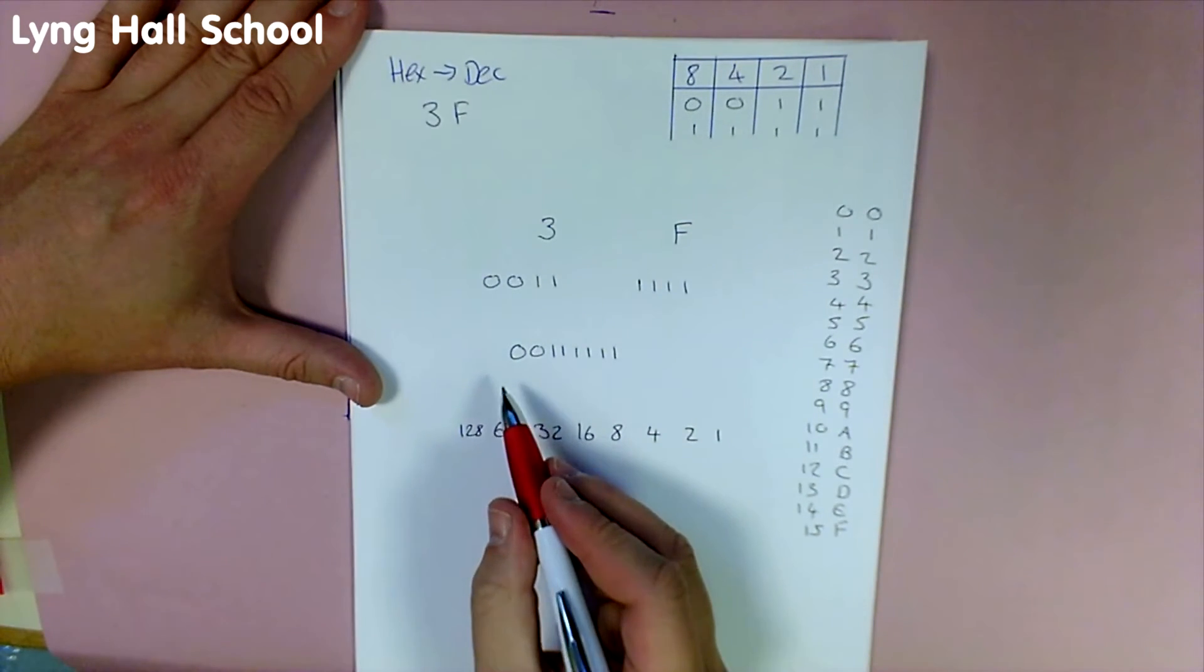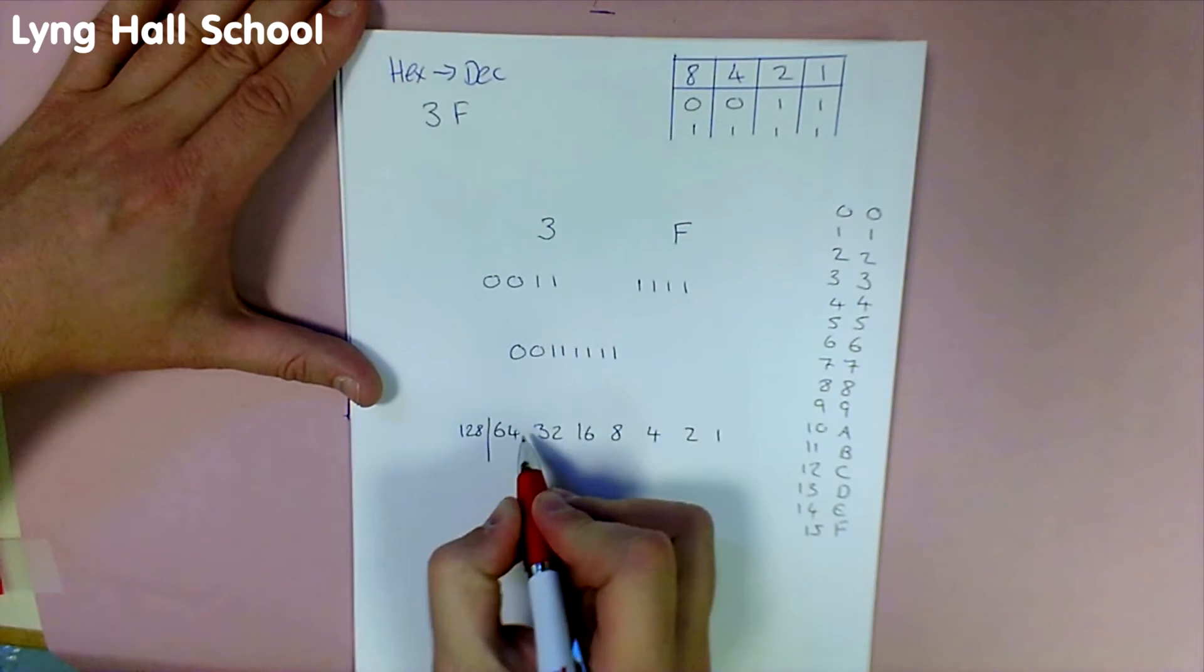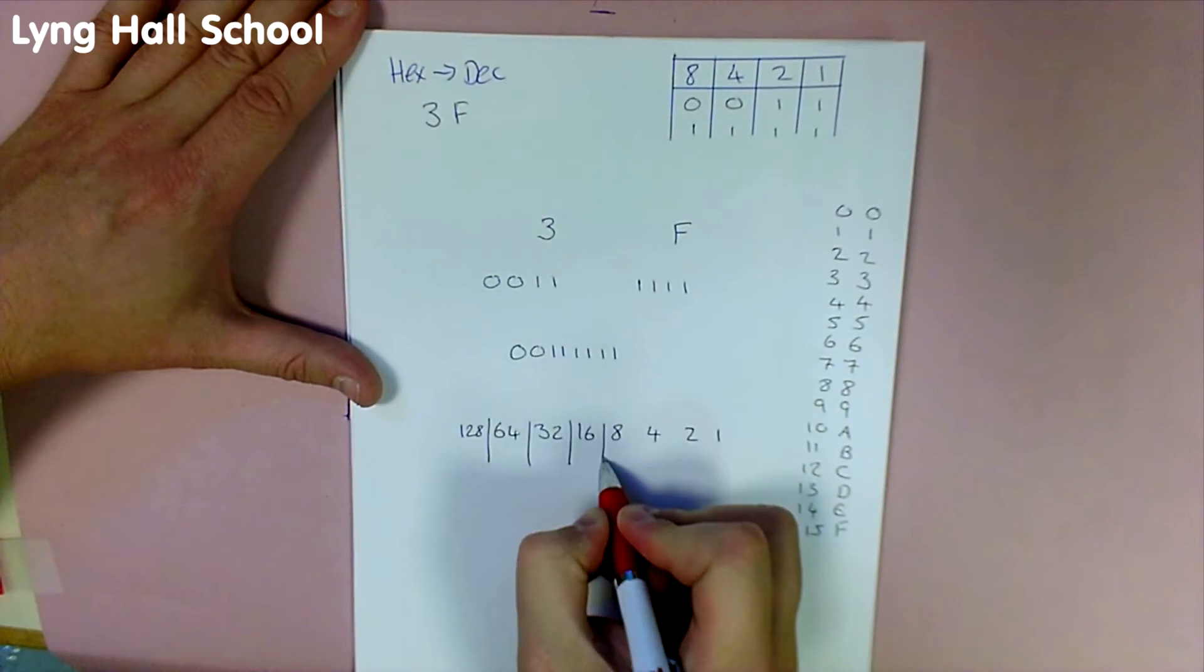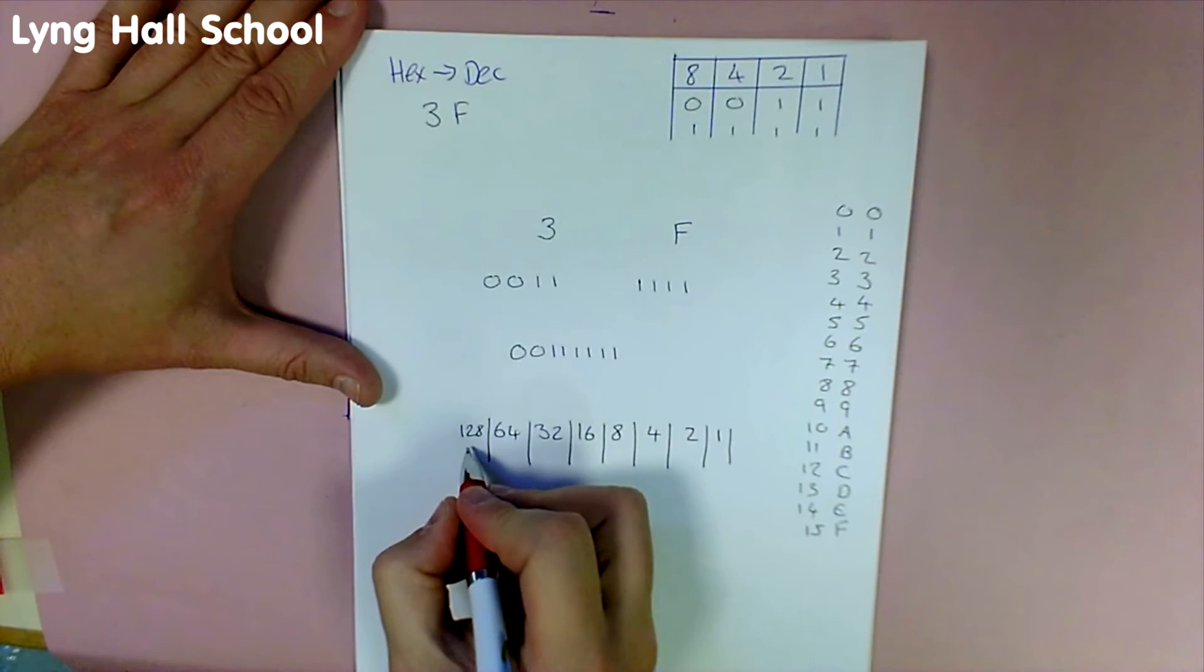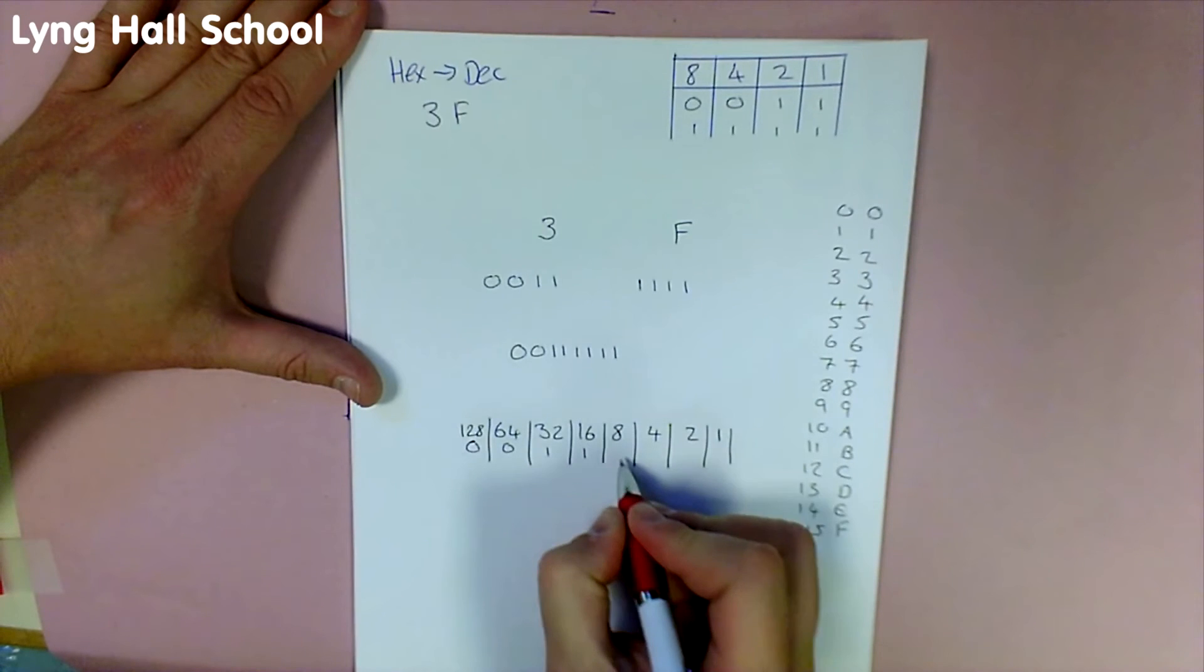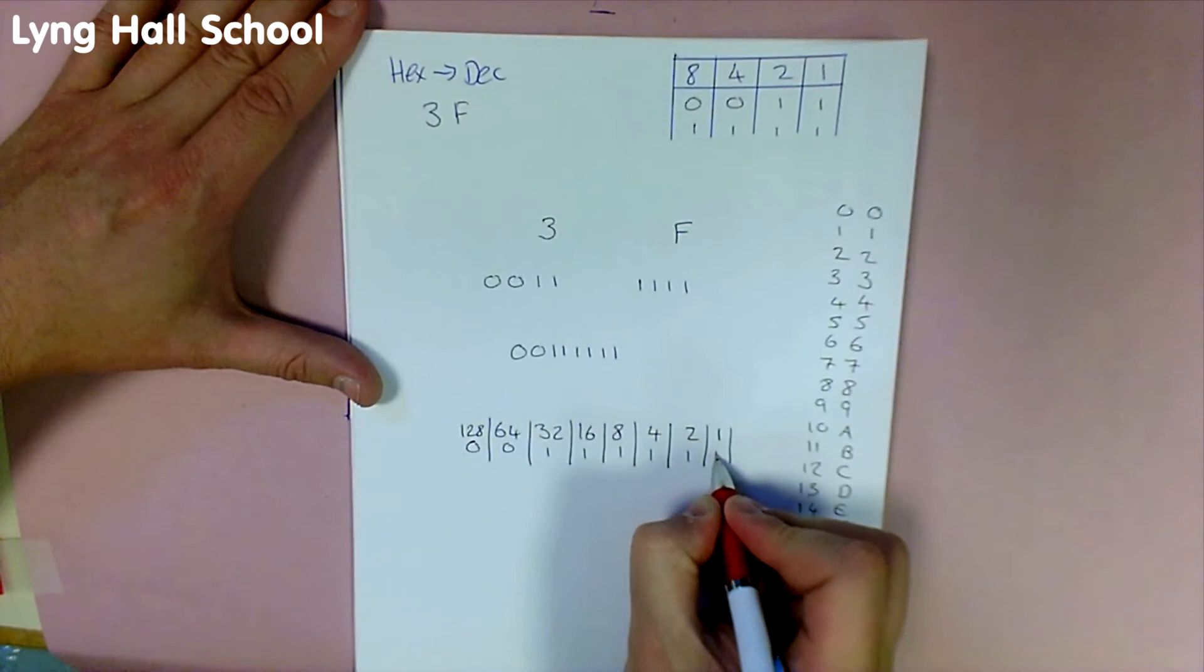We can then write this number in here: 0, 0, 1, 1, 1, 1, 1, 1.